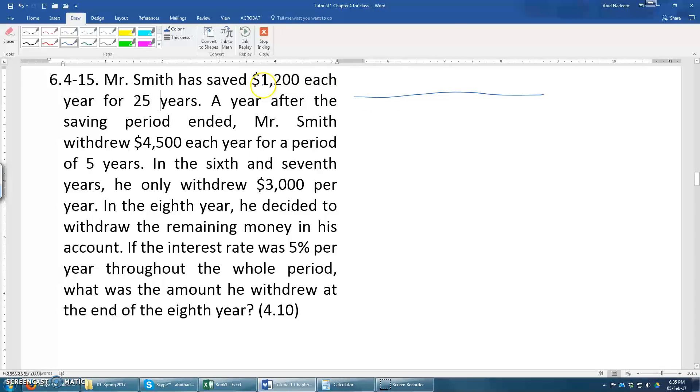So Mr. Smith saved $1,200 each year for 25 years. So he deposited $1,200 for 25 years each year, starting from 1, 2, 3, and then 25 years.